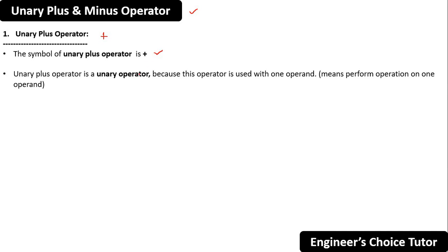The symbol of unary plus operator is this plus symbol. Unary plus operator is a unary operator because this operator is used with one operand, means perform operation on one operand. That is the reason it is called as unary operator or unary plus operator. It is used to denote a positive value.